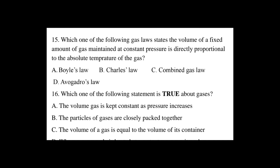Question number 15: Which one of the following gas laws states that the volume of a fixed amount of gas maintained at constant pressure is directly proportional to the absolute temperature of a gas? A. Boyle's law, B. Charles's law, C. Combined gas law, D. Avogadro's law. Volume is directly proportional to temperature at constant pressure — this is Charles's law. The correct answer is B.